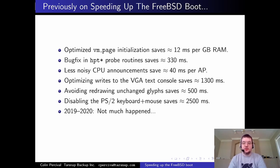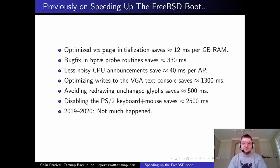Optimizing writes to the VGA text console saved about 1.3 seconds. Rather than writing two 8-bit bytes at a time, you can perform a single 16-bit write in half the time. I also added code to avoid overwriting blanks with blanks during screen scrolling. One EC2-specific change: I turned off the PS2 keyboard and mouse, since they don't exist in EC2 — and our routines for resetting the PS2 keyboard controller are very slow.